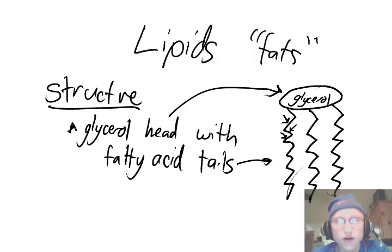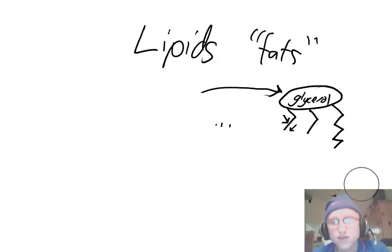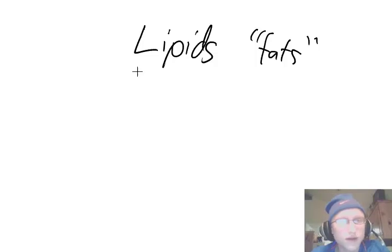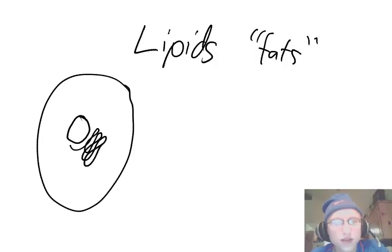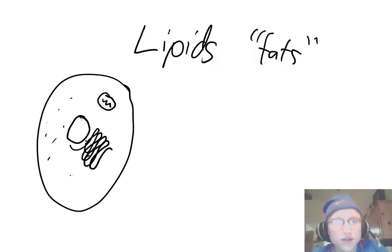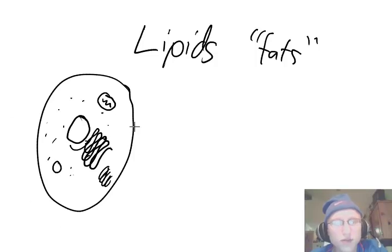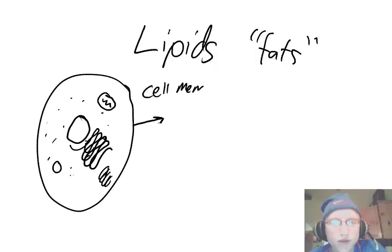Let's move on to how lipids are structured in the cell membrane. Let's take a look at a cell membrane to see how lipids are actually in that membrane. Imagine you've got a cell — that's the cell membrane. This is an animal cell, so there's no cell wall. There's the nucleus, the endoplasmic reticulum all folded up, the mitochondria, ribosomes everywhere, a Golgi body, and a lysosome. This is a typical animal cell, and right here is the cell membrane.